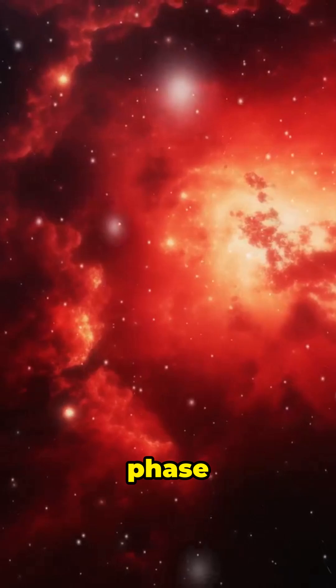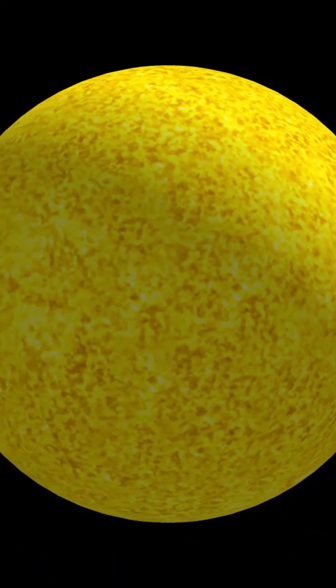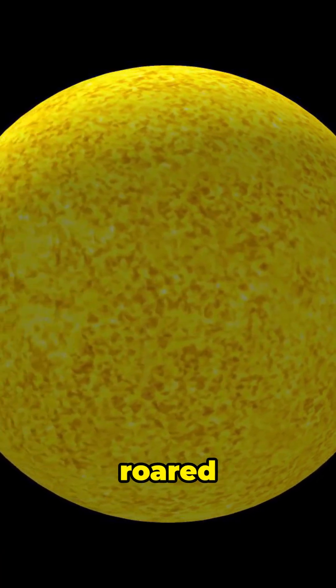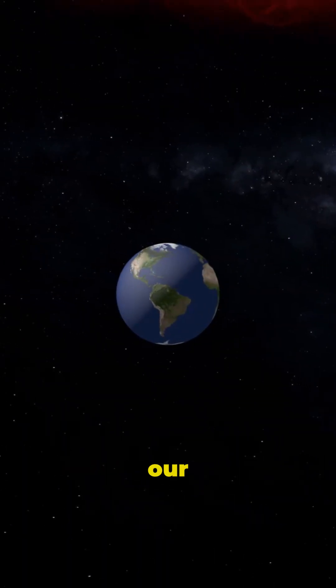Scientists call this phase the T-Tori stage, aka the sun's rock star days. It spun faster, roared louder, and even pushed away leftover gas and dust, shaping our solar system.